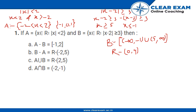First, let's check for A. In A, mod x is less than 2 has been given to us. This implies that x is less than 2 and x is greater than minus 2. So this is the range of x from minus 2 to 2. So these are the numbers present in A.